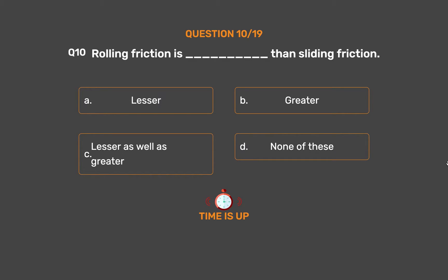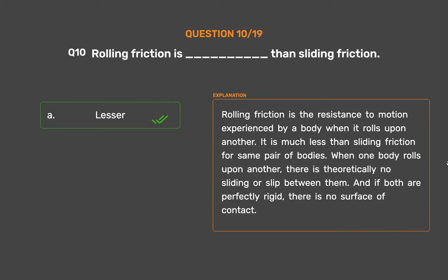The correct answer is Option A: Lesser. Rolling friction is the resistance to motion experienced by a body when it rolls upon another. It is much less than sliding friction for the same pair of bodies. When one body rolls upon another, there is theoretically no sliding or slip between them, and if both are perfectly rigid, there is no surface of contact.